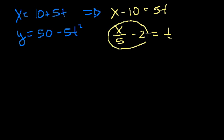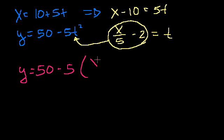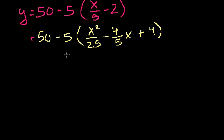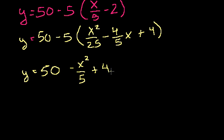And now we can take this and substitute it. This is t. So we can take this and substitute it back here for t. Because we say this is equal to t. So our equation becomes y is equal to 50 minus 5 times x over 5 minus 2 squared. And let's simplify this. So this is equal to 50 minus 5 times x squared over 25 minus 4 fifths x plus 4. And then if you multiply, so you get y is equal to 50 minus 5 times, minus 5 over 25 is minus 1 fifth. So minus x squared over 5, minus 5 times minus 4 fifths is plus 4x. And then minus 5 times 4 is minus 20.